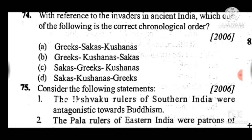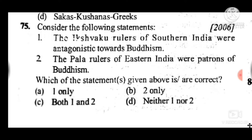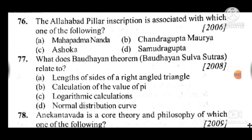Question 75: The Kshatrapa rulers of southern India were antagonistic towards Buddhism; the Pala rulers of eastern India were patrons of Buddhism. Answer is B — only the second statement is correct. Question 76: The Allahabad pillar inscription is associated with which one of the following? Answer is D, Samudragupta.